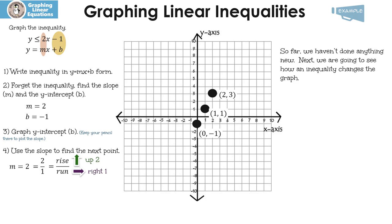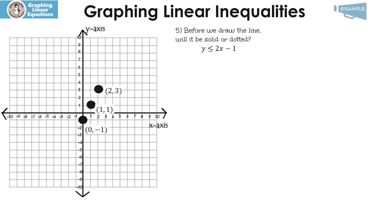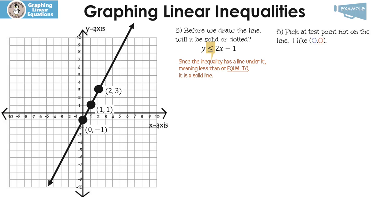So far, we haven't done anything new. Next, we're going to see how an inequality actually changes the graph. Before we draw the line, we need to decide: is it going to be solid or dotted? Since the inequality has a line under it, it's telling us it's less than or equal to, so it needs to be a solid line. Pick a test point not on the line, like 0, 0. The answer to an inequality is not just a line — it's a whole region. We need to figure out if the solution set is above or below the line, and that's why we're picking a test point.